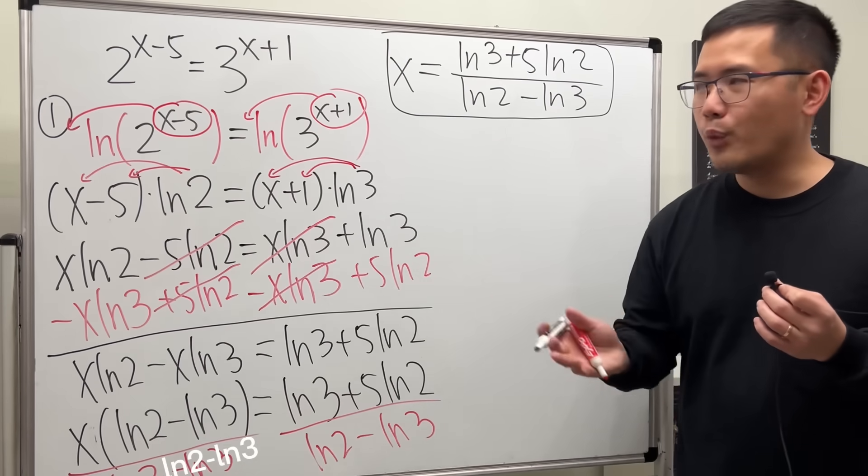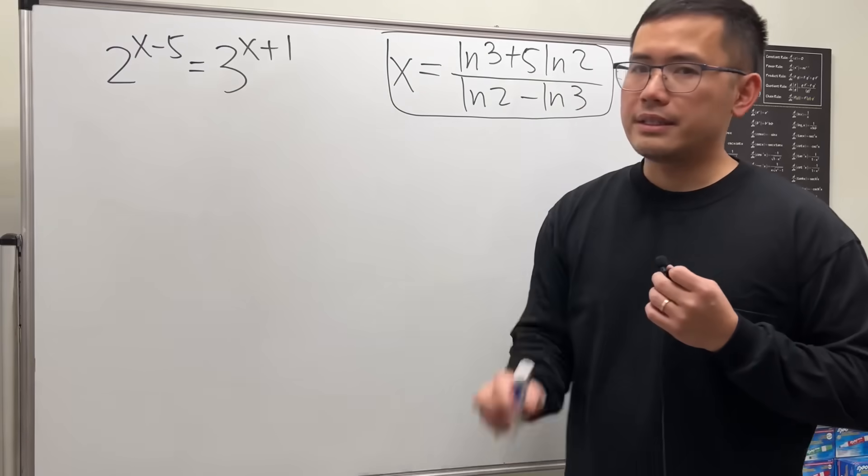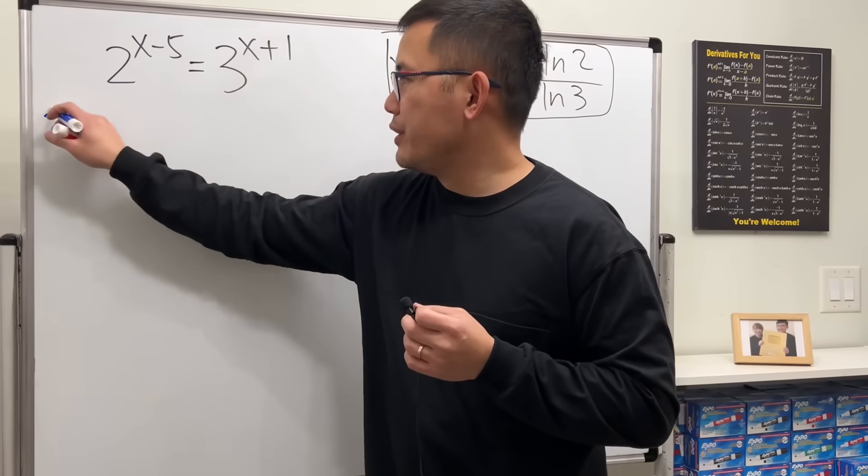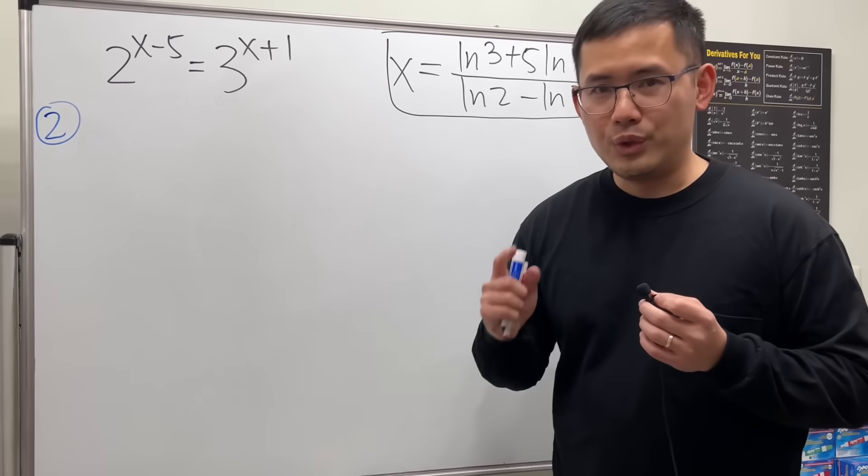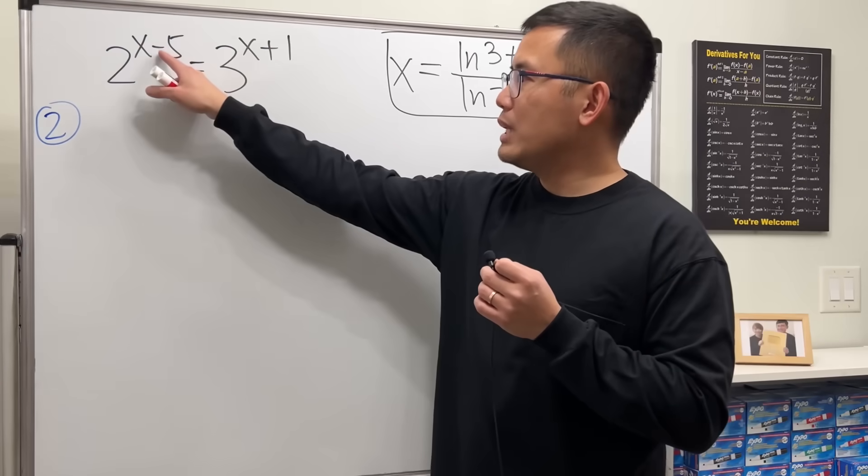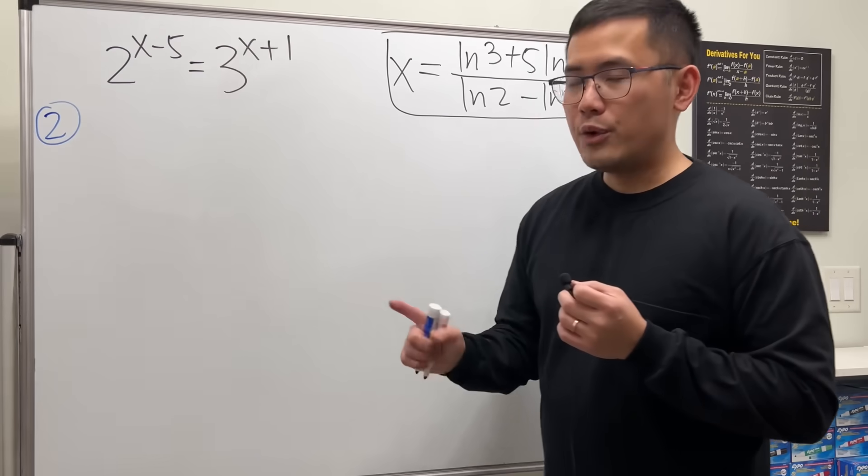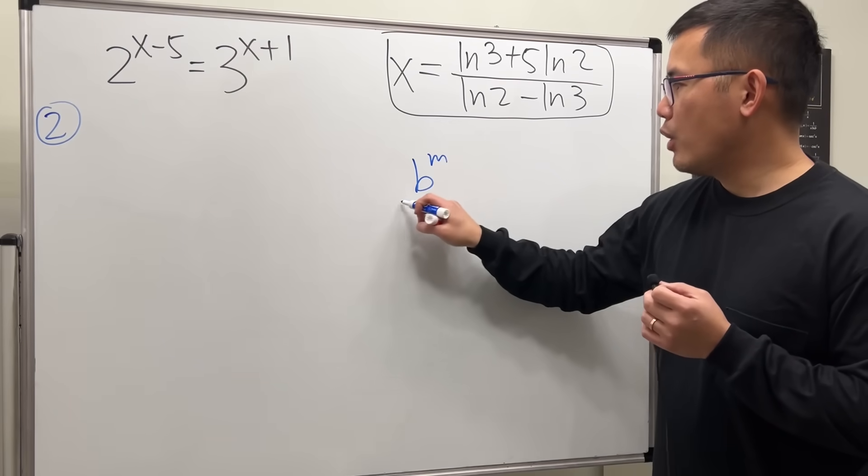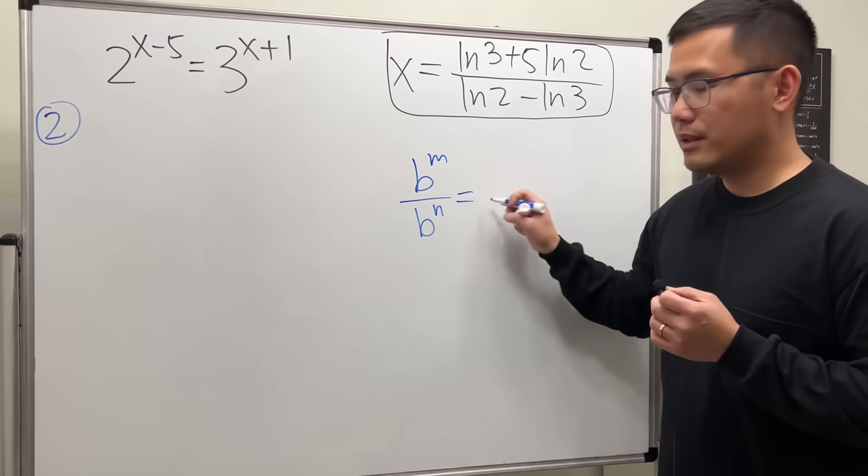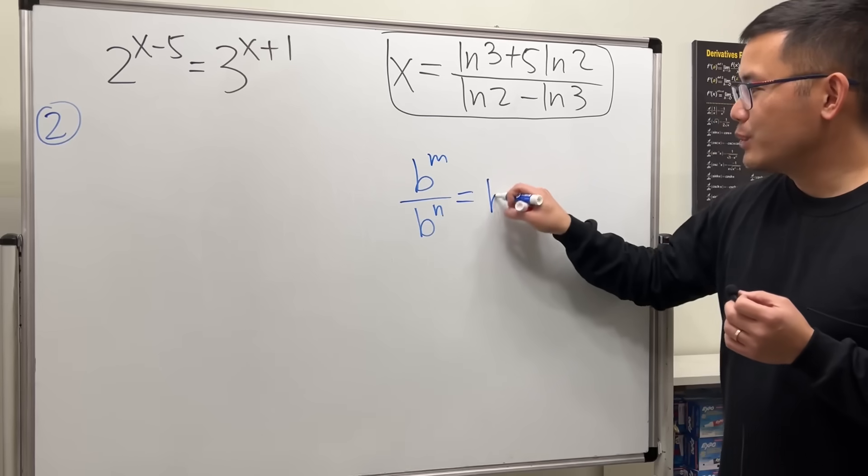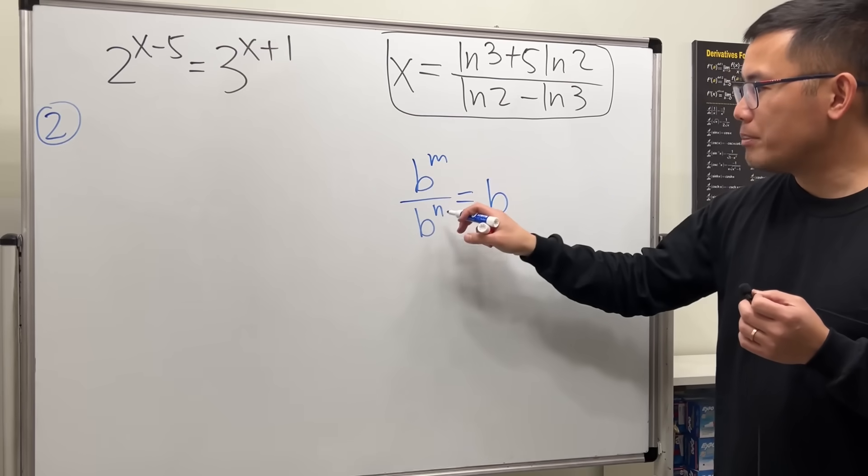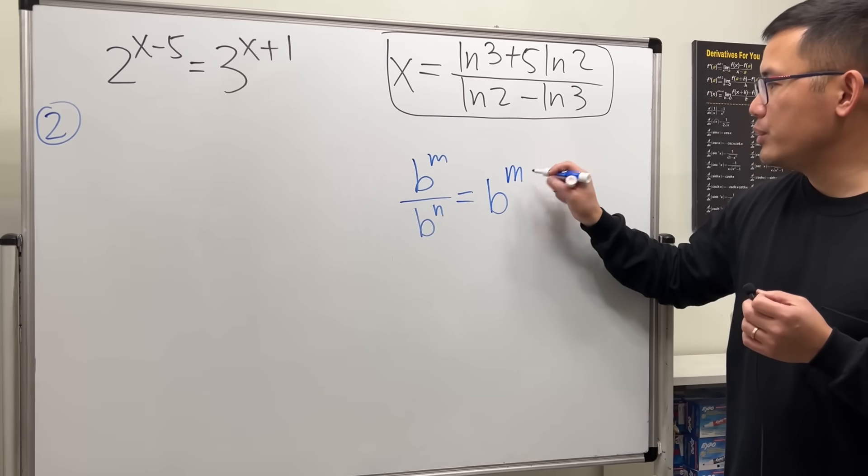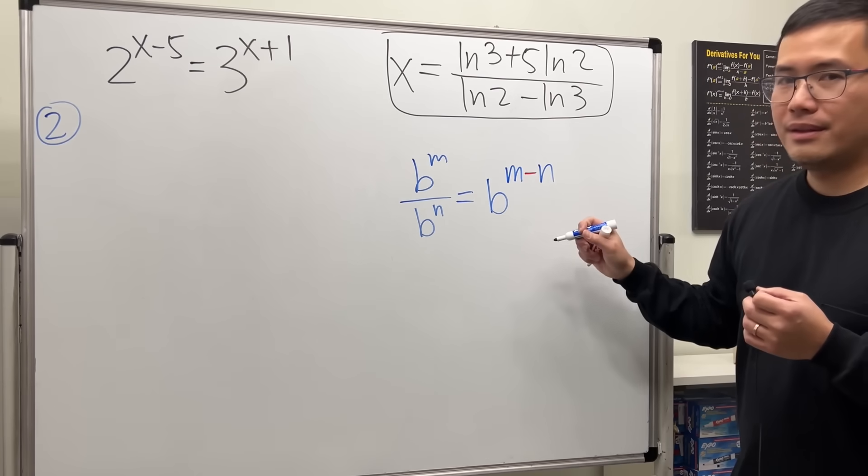Now, let me show you guys a prettier way to do this. Just a prettier way, in my opinion. We use the rule of exponent first. Notice that we have a subtraction here. And remember the rule of exponent. If we have b to the m over b to the n, what do we do? Well, we subtract the exponents. Top one minus the bottom one. So b to the m minus n.